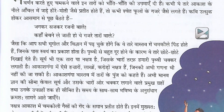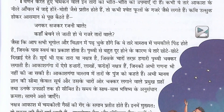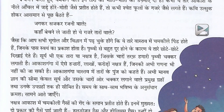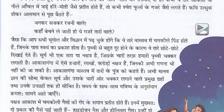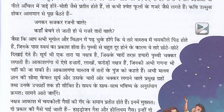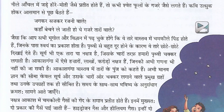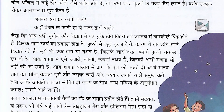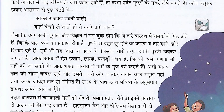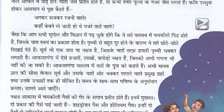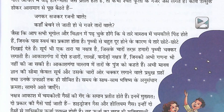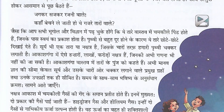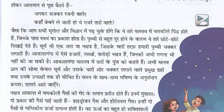जिनके पास स्वयम का प्रकाश होता है, पृत्वी से बहुत दूर होने के कारण ये तारे छोटे-छोटे दिखाई देते हैं। सूरे भी एक तारा या नक्षत्र है जिसके चारों तरफ हमारी पृत्वी चक्कर लगाती है। आकाश गंगा means galaxy में ऐसे हजारों, लाखों, करोणों नक्षत्र हैं। (Stars which have their own light appear small due to being very far from Earth. The Sun is also a star/nakshatra around which our Earth revolves. In the galaxy there are thousands, lakhs, crores of nakshatras.)